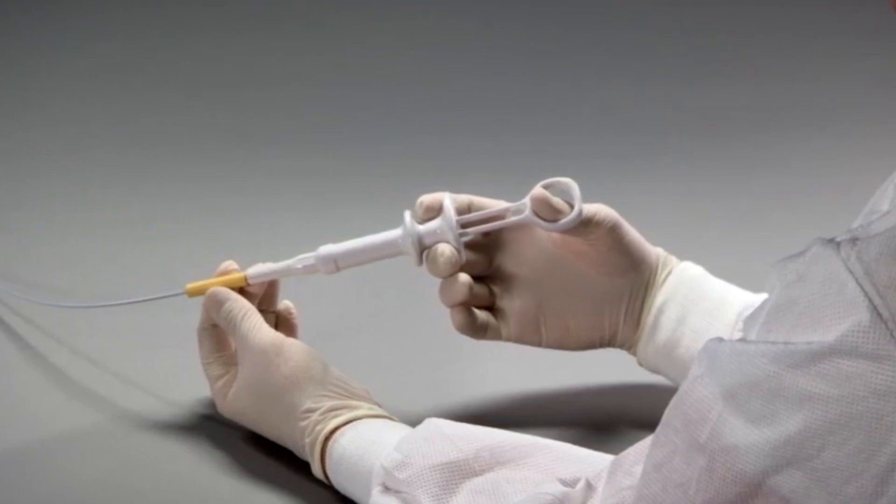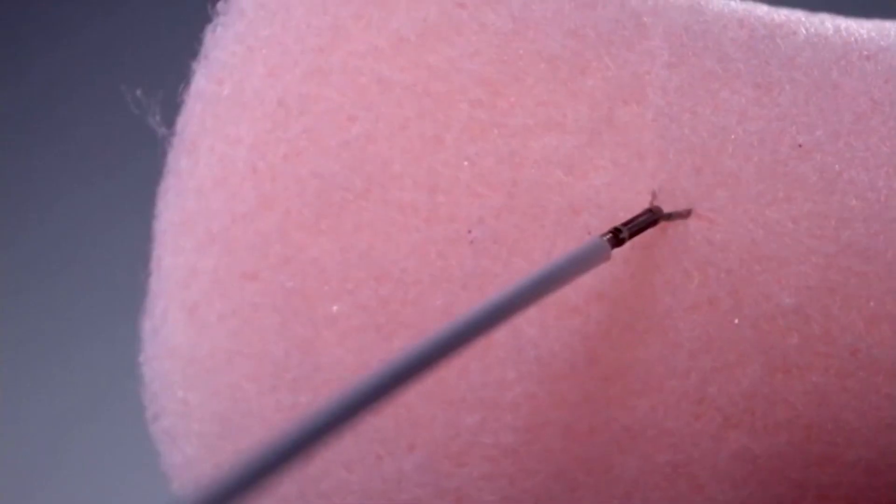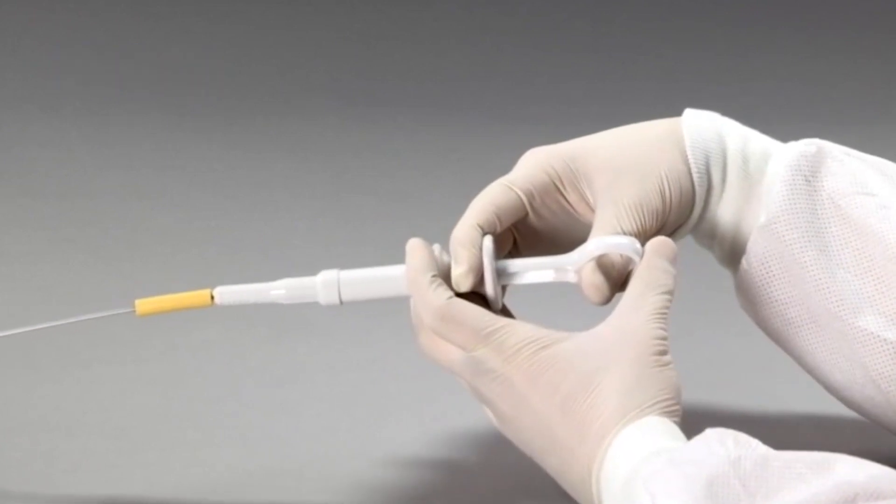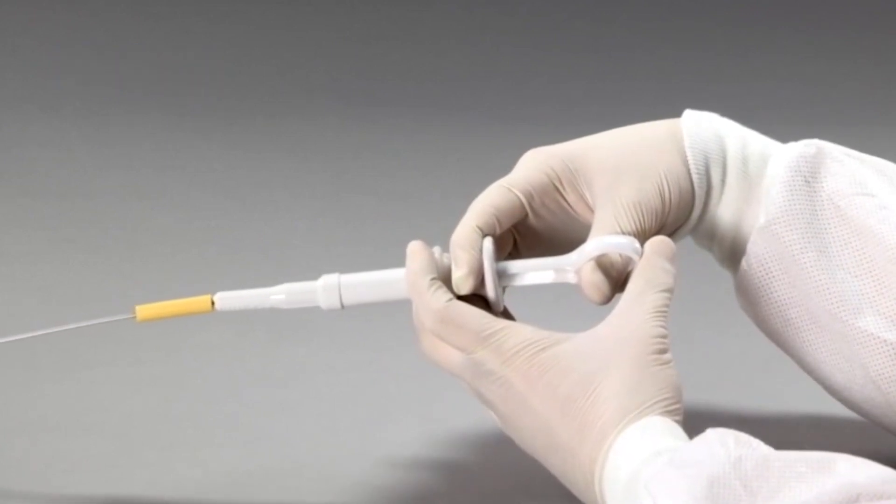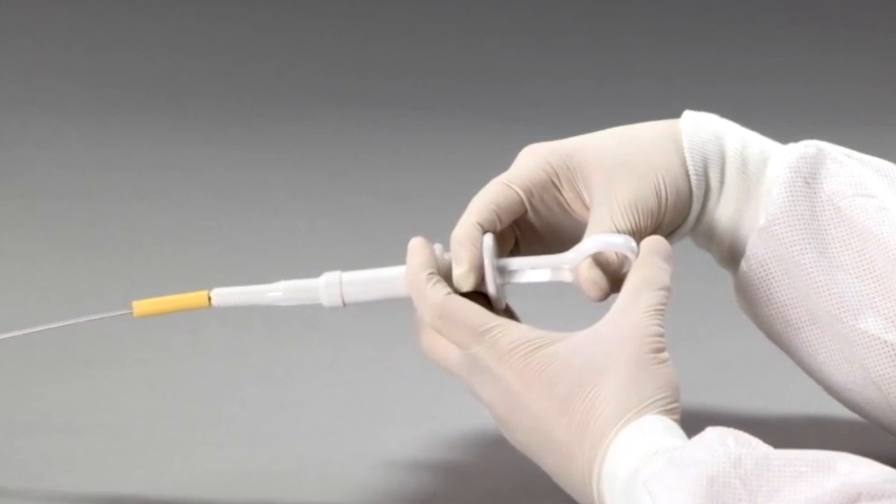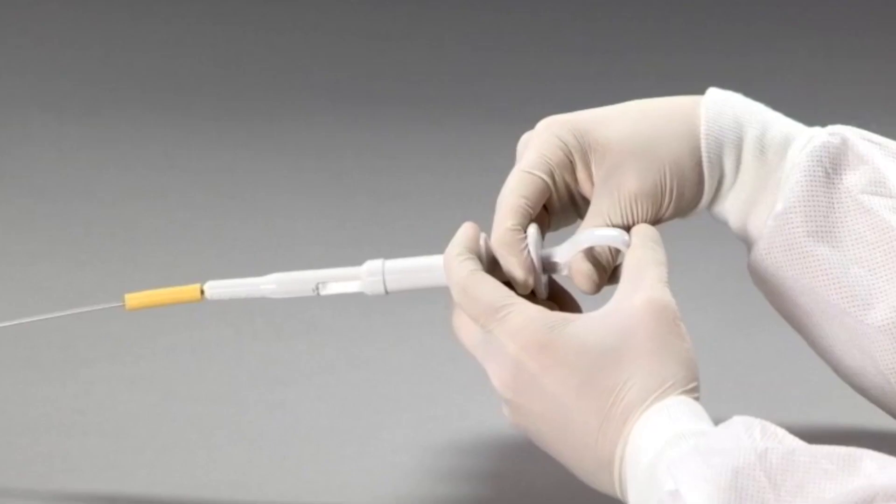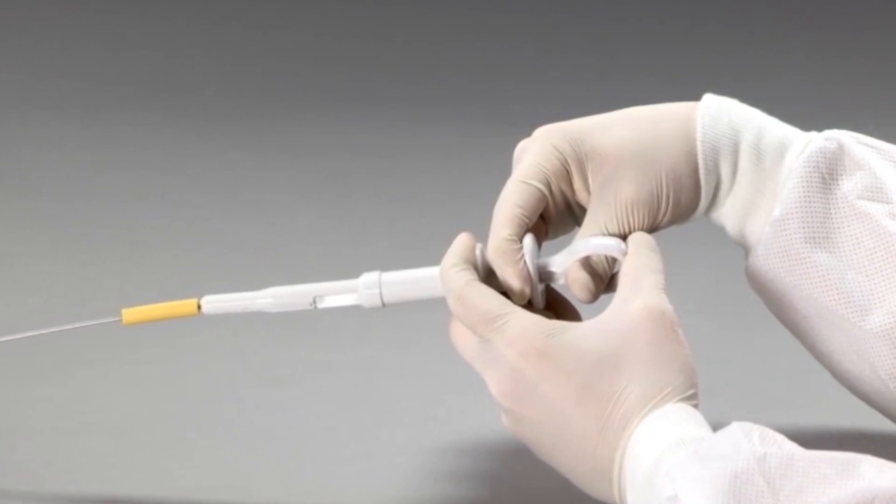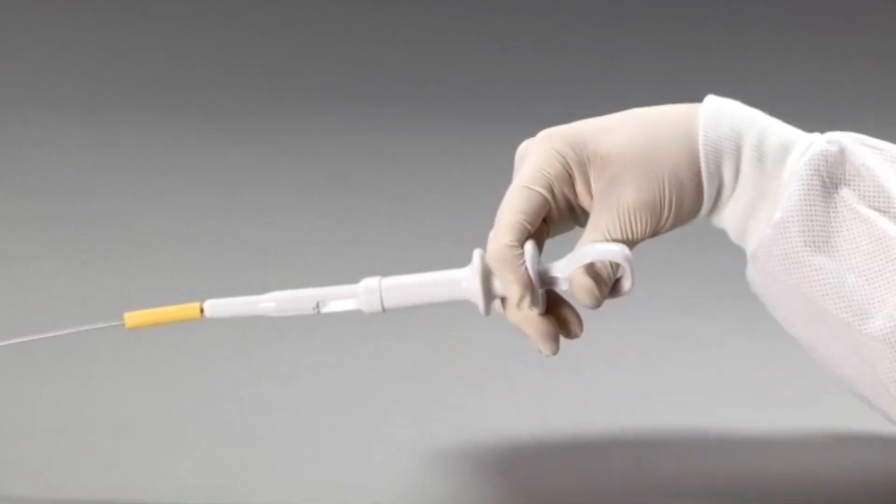Once the clip is closed and in the desired position you are ready to fire the clip. To fire the clip pull the slider forcefully all the way back with both hands. You will hear an audible click. It is recommended that you use both hands to fire the clip since the force to deploy is high to limit accidental deployment.